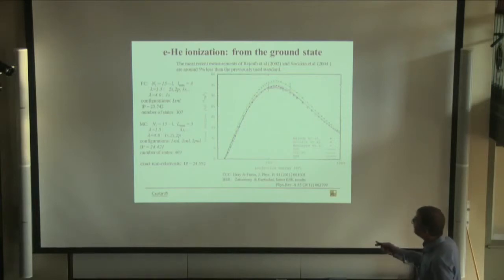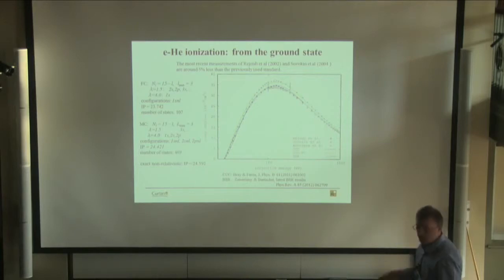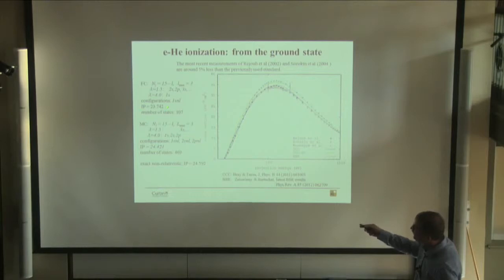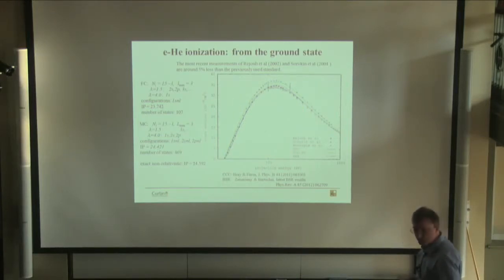Our previous calculations were done in a frozen-core model. A more recent model uses 15 Laguerre functions, a 15-L model with Lmax equal to 3, meaning only up to F-states — which is enough to obtain convergence. Only frozen-core configurations of the type 1s-nL are included. There is a naturally resulting error in the ionization potential compared to the exact value. Running this calculation gives the green line, which goes through the previous experimental data.